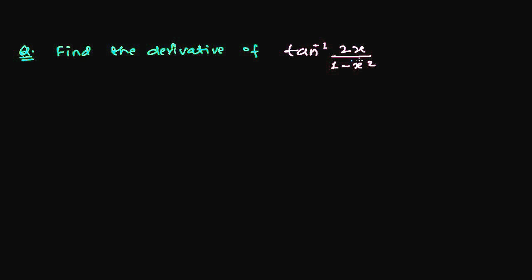Let's try to find out the derivative of tan inverse 2x over 1 minus x squared. So let me suppose our function y is equal with tan inverse of 2x over 1 minus x squared.